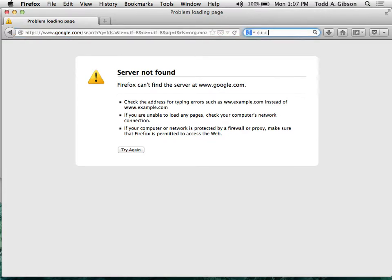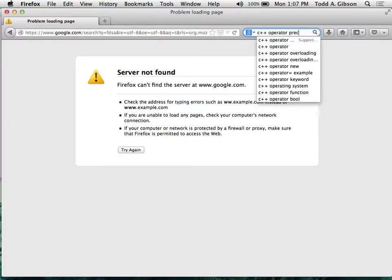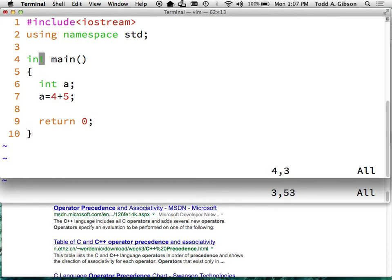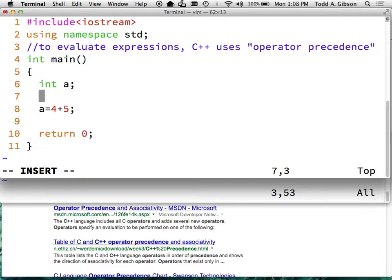And what I can do is I can go to Google and I can type C plus plus. And the term I am looking for is, and let me put this in a comment, to evaluate expressions, C++ uses operator precedence. And that is something that you all know fairly intuitively. So let me give you a different example before I go back to the webpage. If I create an integer b, and I say that b is equal to 4 plus 5 times 6,